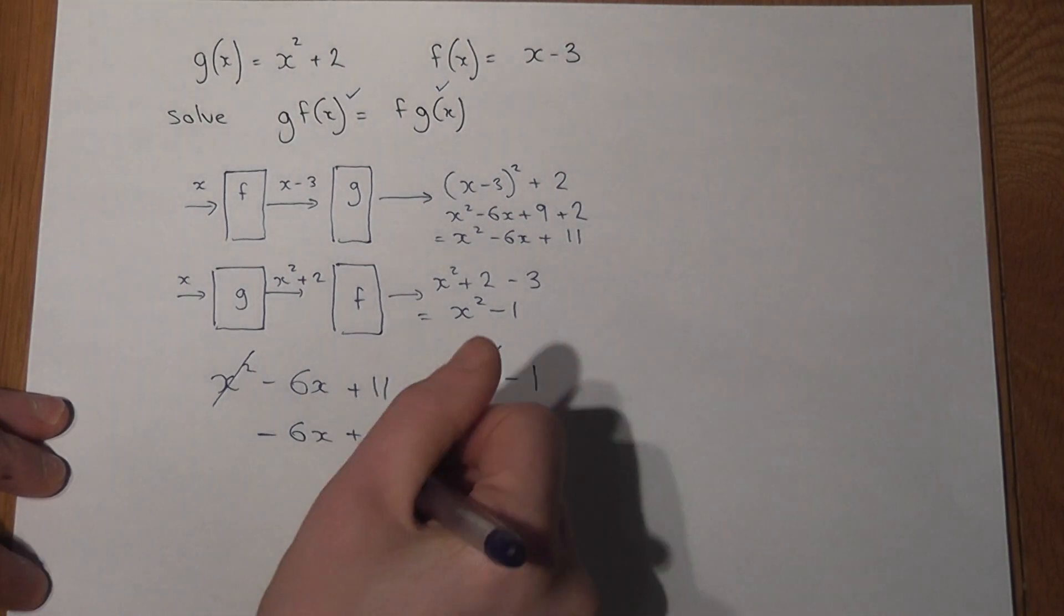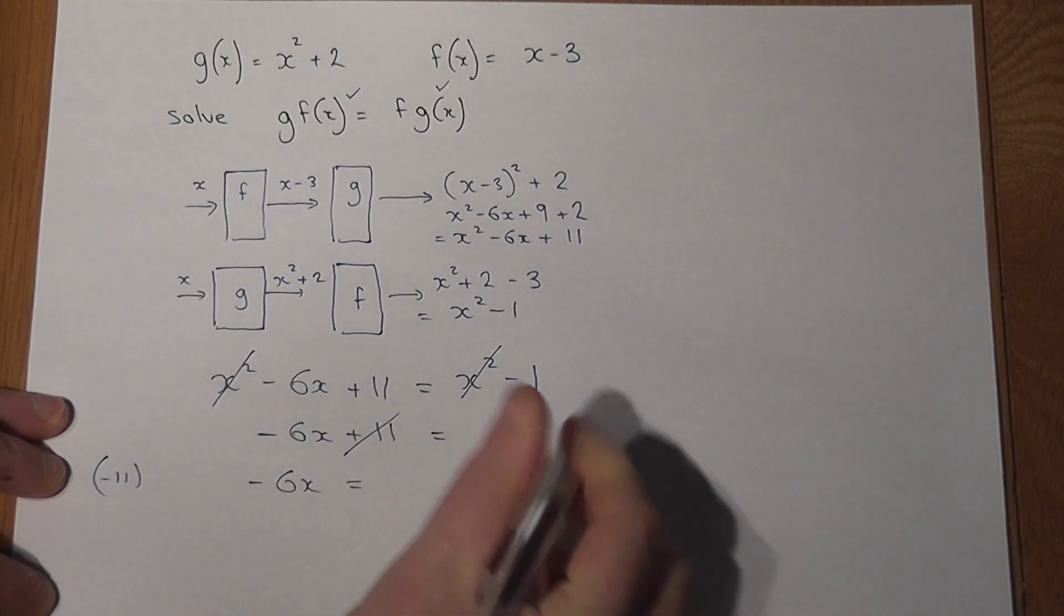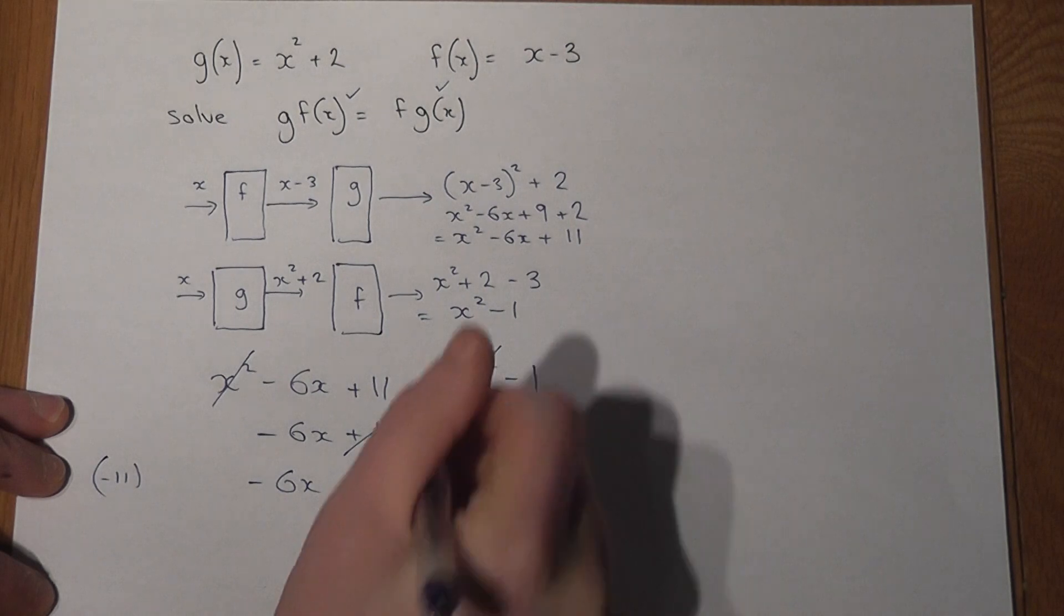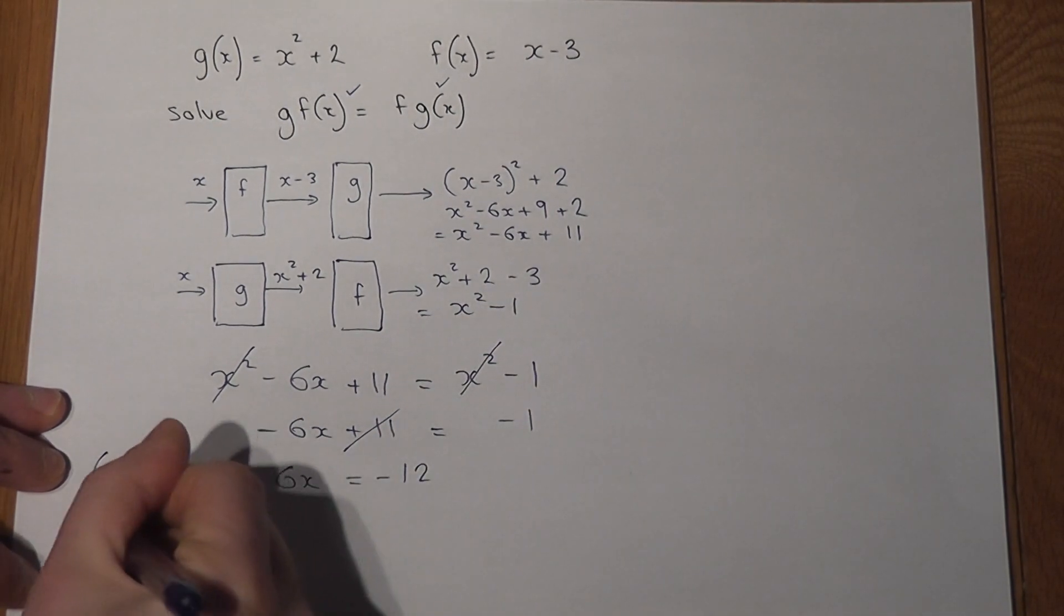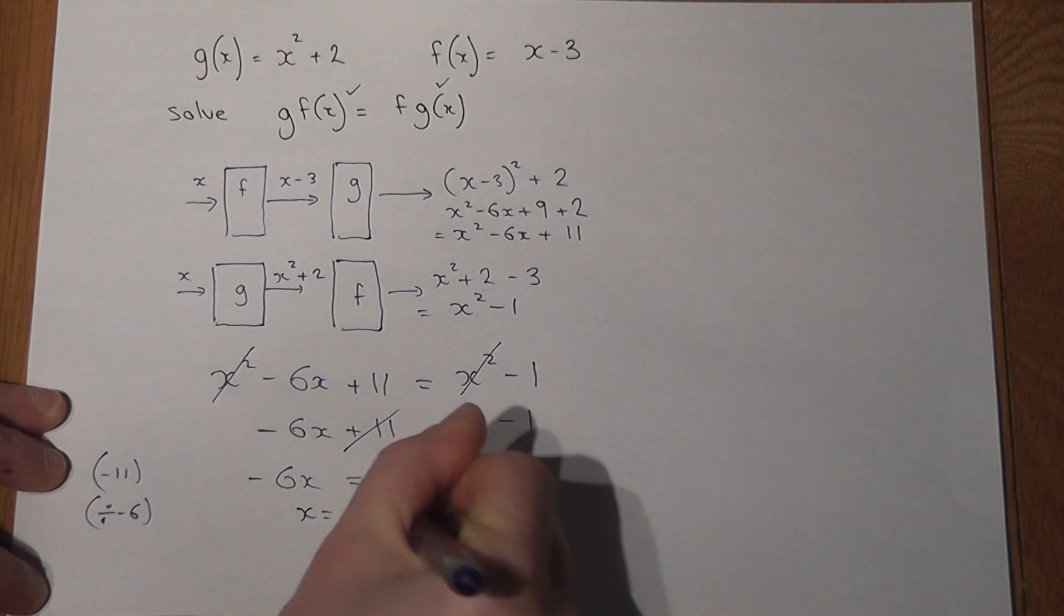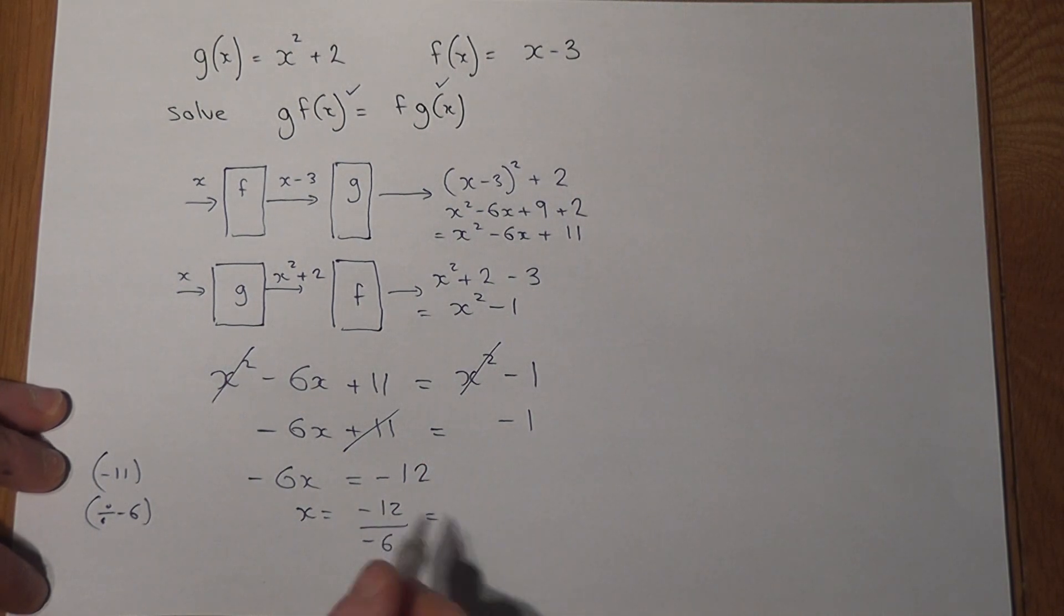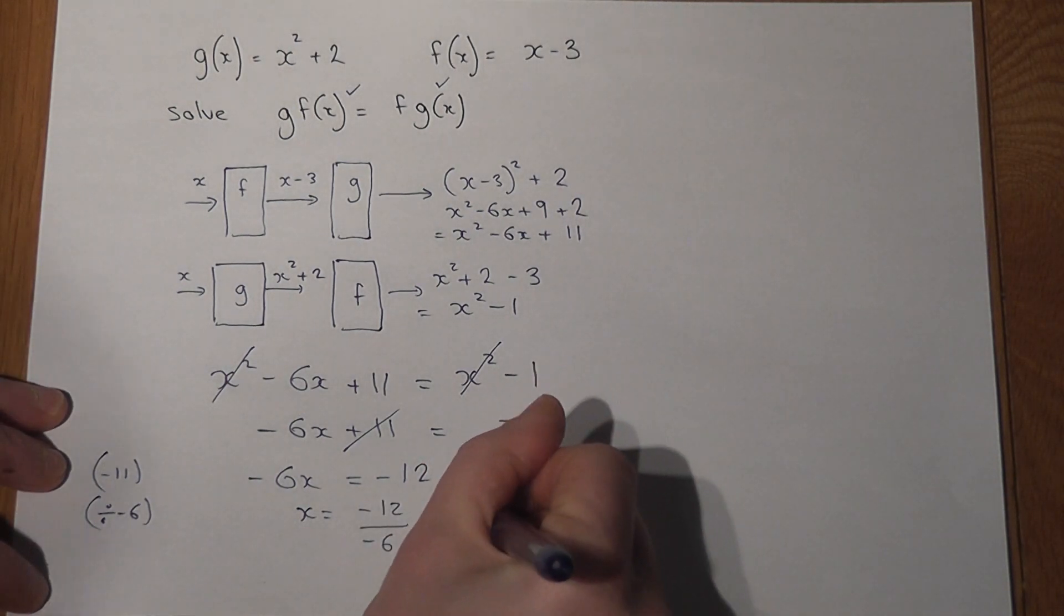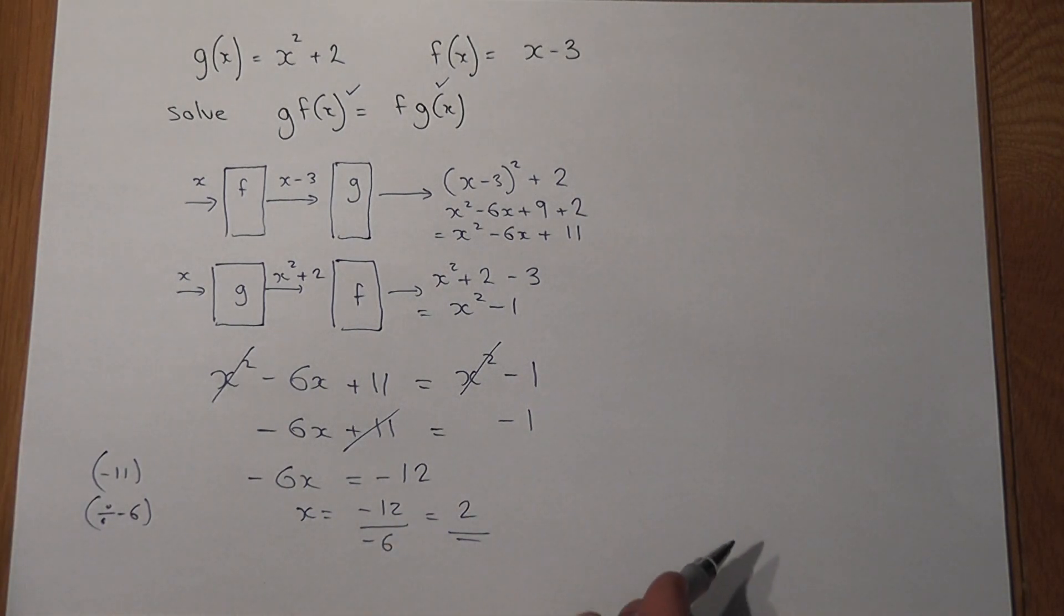Personally I take away the 11 from both sides, so minus 6x becomes minus 1 take 11 is minus 12. Then I divide by the minus 6, so x becomes minus 12 over minus 6. The two negatives cancel out and 12 over 6 becomes positive 2. So the solution to the equation is x equals plus 2.